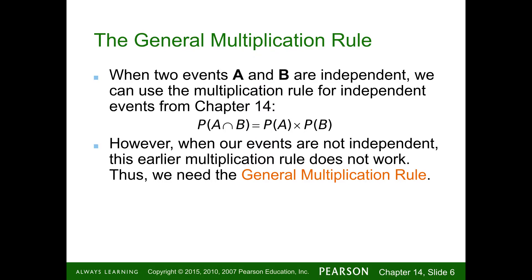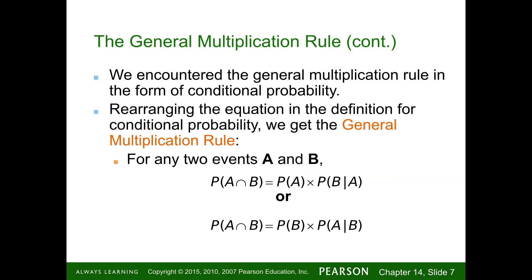When our events are not independent, the earlier multiplication rule does not apply. When they are not independent, we encounter the general multiplication rule in the form of conditional probability. The probability of A and B can be either the probability of A times the probability of B given A, or the probability of B times the probability of A given B.